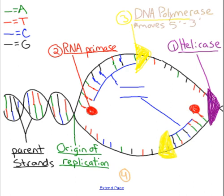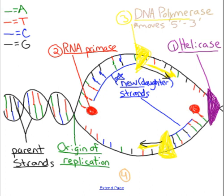A couple of things about DNA polymerase: it moves in a five prime to three prime direction. Five prime is the beginning of DNA and three prime is the end. DNA polymerase actually moves in two separate directions — the top strand moves to the right and the bottom one moves to the left. It only moves in a five prime to three prime direction, and importantly, it is creating new or daughter strands of DNA.